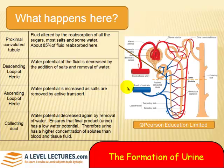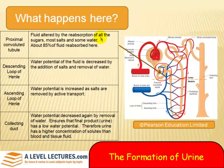Let's recap what we've seen in the previous video. We looked at a kidney tubule or nephron and described briefly what happens at various stages. This top here is the proximal convoluted tubule, where fluid is altered by reabsorption of all the sugars, most salts, and some water. About 85% of the fluid is reabsorbed at this point.